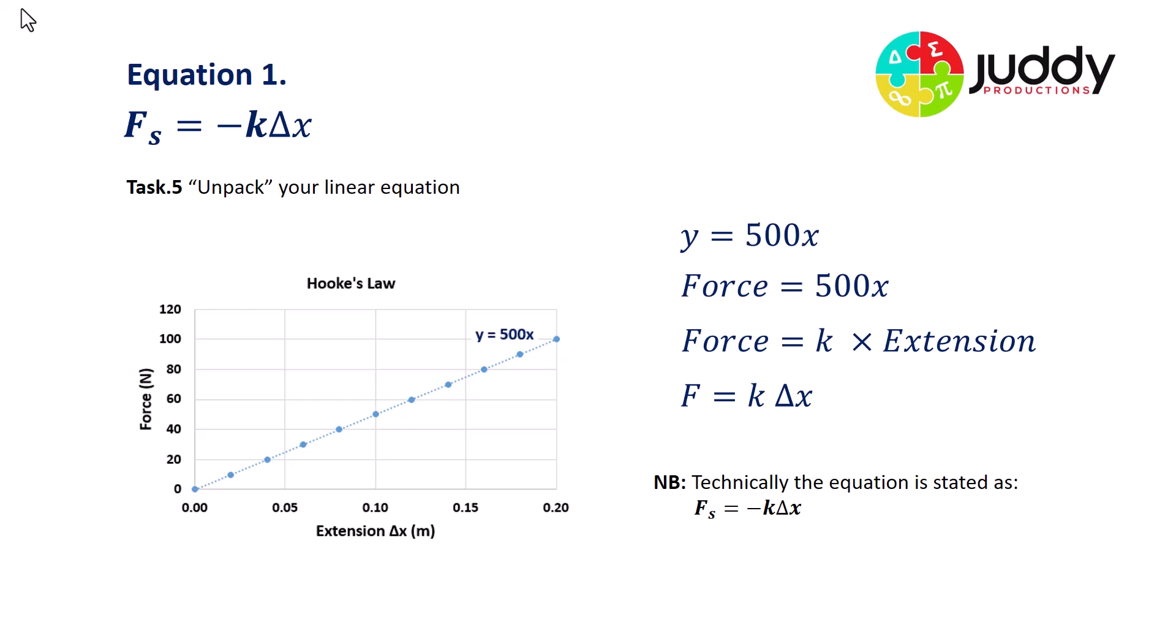Fs, the spring restoring force, is equal to negative K, and K is the spring constant in newtons per meter, multiplied by delta X, the extension in meters.